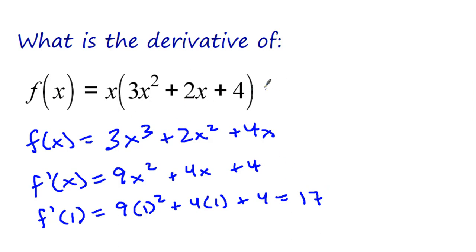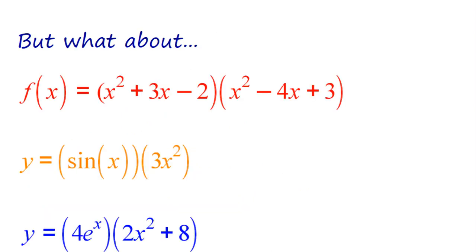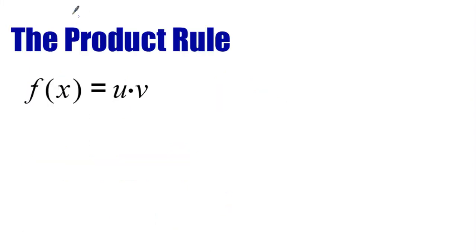We know how to do derivatives like that — we distribute. But what about when the distributing or the foiling is really complicated and it's going to take you a long time? What about weird questions like this? Y equals sine of x times 3x squared, or 4e to the x times 2x squared plus 8. That's where we use what's called the product rule.